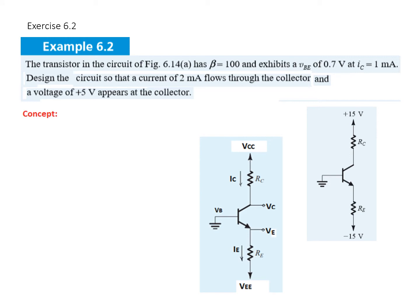Now, from this circuit, the question says that the transistor has a beta of 100 and exhibits VBE of 0.7 volts at IC of 1 milliampere. So this voltage VBE is 0.7V when the collector current is 1 milliampere. We have to design a circuit so that a current of 2 milliampere flows through the collector.